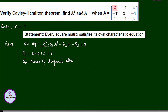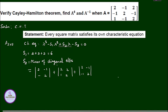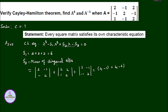The first diagonal element is 2. The minor of 2 is the determinant of the 2x2 submatrix obtained by leaving its row and column. The second diagonal element is 2, leaving its corresponding row and column, giving the determinant of the remaining 2x2 submatrix. Similarly, the third diagonal element is 2, leaving its corresponding row and column, and taking the determinant of the remaining elements.